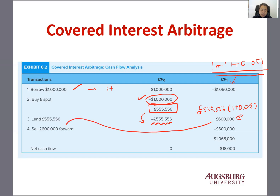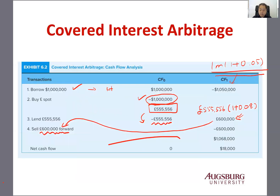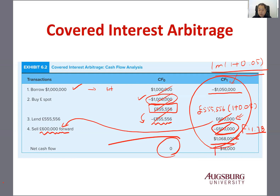Now you sell those 600,000 pounds forward to cover the repayment and hedge against currency risk. The forward rate is $1.78, so with 600,000 pounds you receive $1,068,000. So eventually, no cash flow occurs initially, and then next period, if you total all four cash flows, you make $18,000.